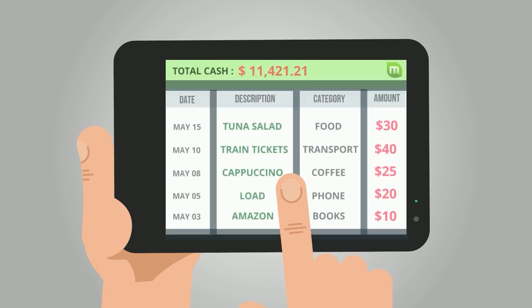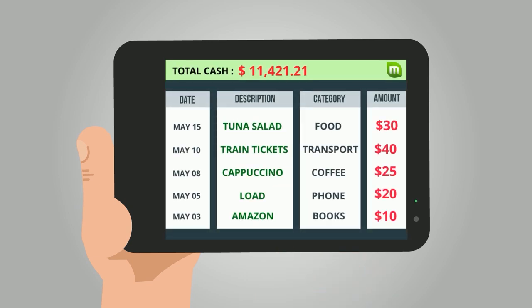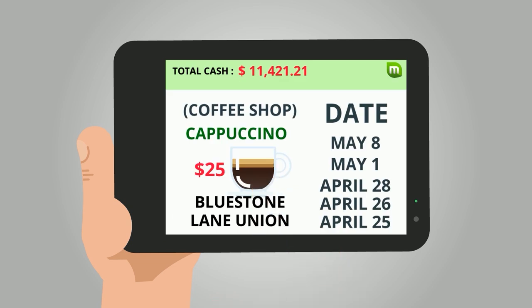Whichever method you choose, the objective is the same, record and categorize every dime you spend, and then review them to know the areas where you tend to overspend.